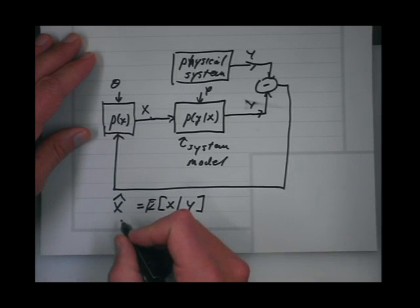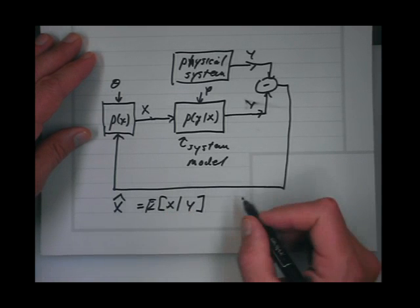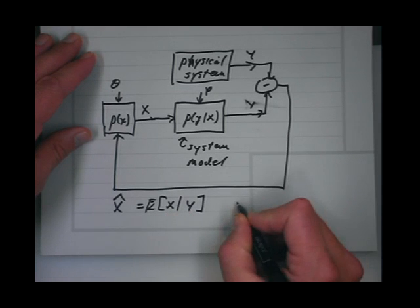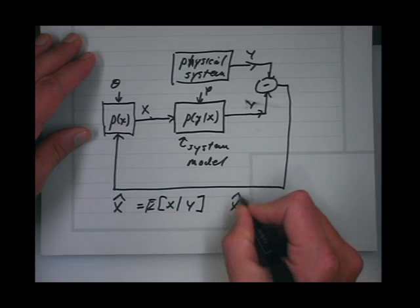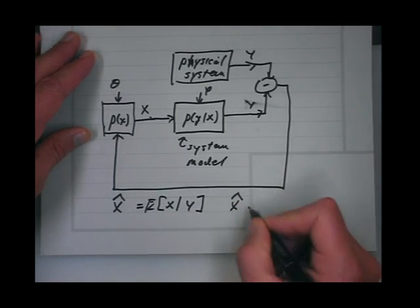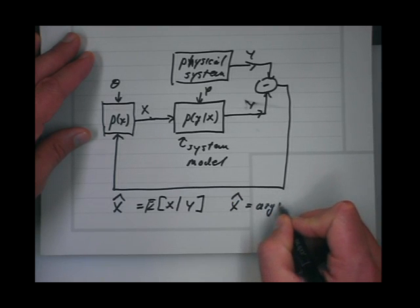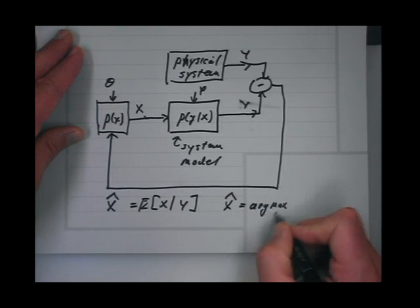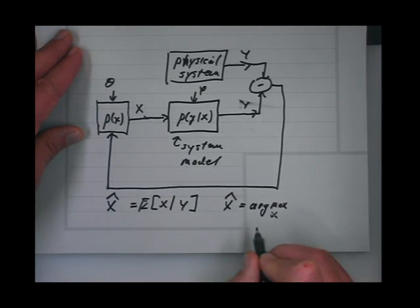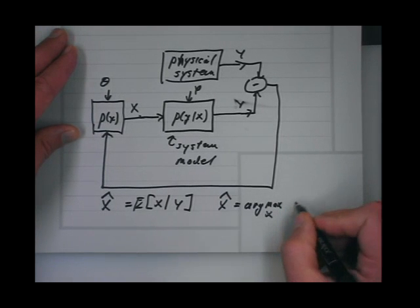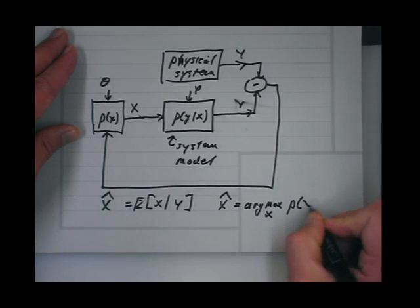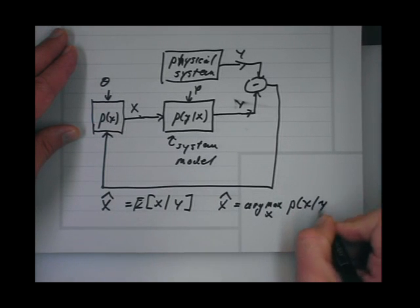This is the minimum mean square error estimate. Instead, we are going to use the MAP estimate. The MAP estimate is the arg max over x of the probability of x given y.